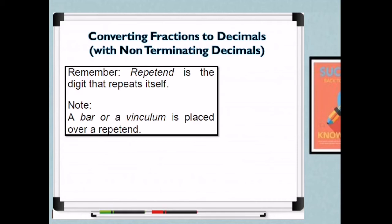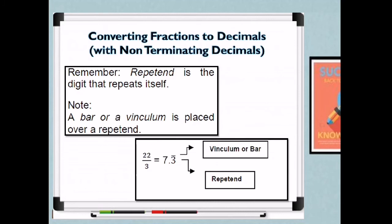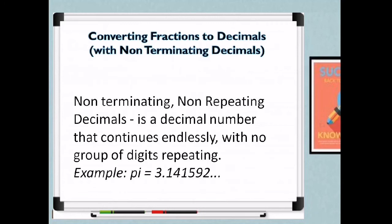A repeated digit is one that repeats itself. A bar or vinculum is placed over the repeated digit. For example, 22/3 equals 7.3333..., so we write 7.3 with a bar on top. Similarly, our answer of 0.33... can be written with a bar over the 3, and 1.66... with a bar over the 6. These are non-terminating repeating decimals — instead of writing all the digits, we place a bar on top.